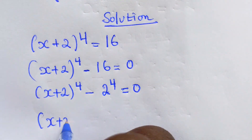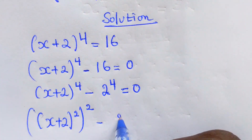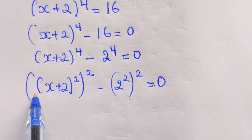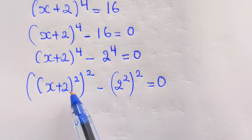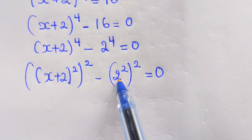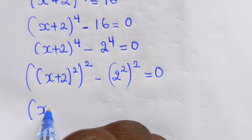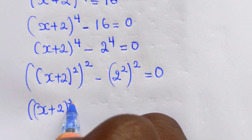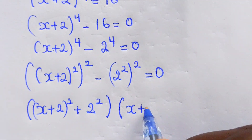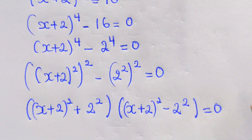At this stage we can write x plus 2 squared, squared, minus 2 squared, squared, equal to zero. If we look at this nicely, this question has been transformed into a difference of two squares, where this part is a squared and this part is b squared. So we get: x plus 2 squared, plus 2 squared, times x plus 2 squared, minus 2 squared, equal to zero.